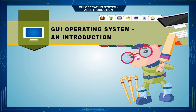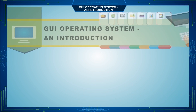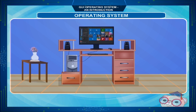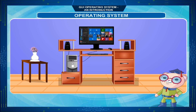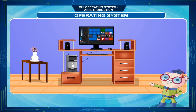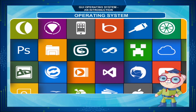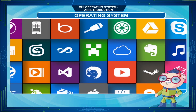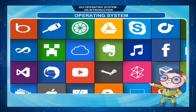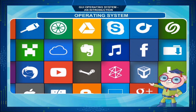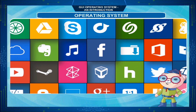An Operating System is a software that enables a computer to understand the commands given by the user. It works as an interface between the computer hardware and the user.